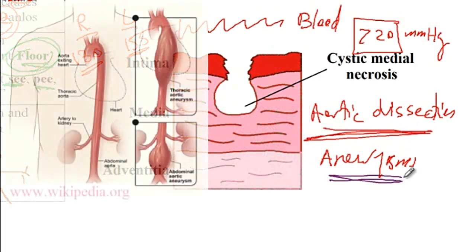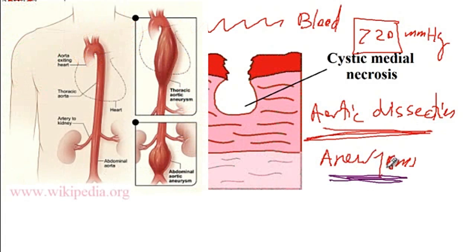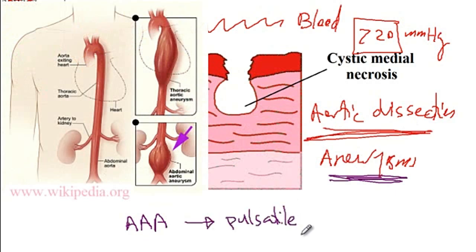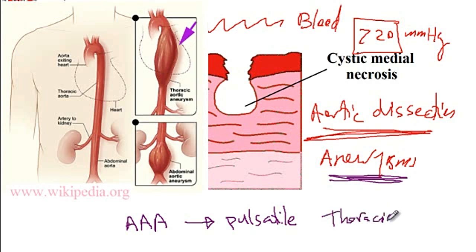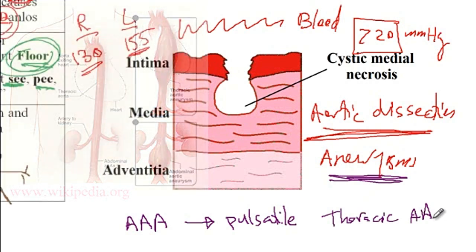With aortic aneurysm, the presentation depends on the location. If there is an abdominal aortic aneurysm, you will see a pulsatile abdominal mass, and due to compression of nearby organs, it could also cause abdominal pain. Versus a thoracic aortic aneurysm, which compresses structures in the thorax, causing hoarseness of the voice or sometimes paralysis of the diaphragm.